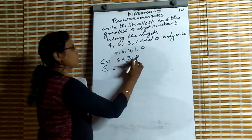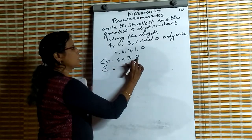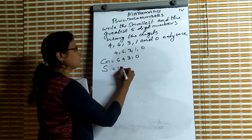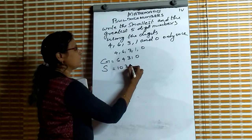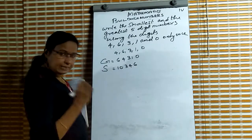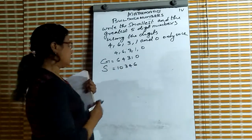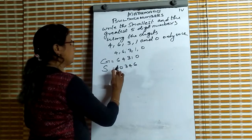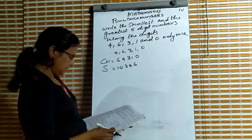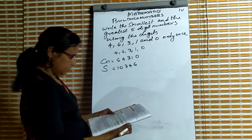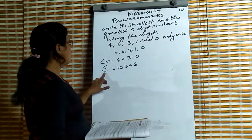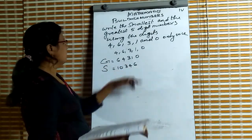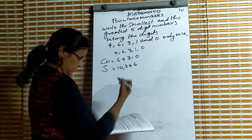Which is the smallest number? What is the rule? Since 0 cannot be first, we put 1 first, then 0 second, then 3, 4, 6. This is the smallest number, and the greatest number is 64,310.